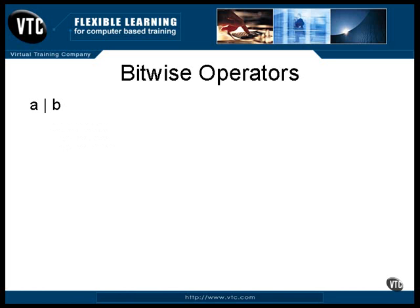A vertical bar between two integer expressions will result in a value that has a one where either of the two input values had a one. In this example, you can see that the only bits left zero in the output were the ones that were both zero in the input values.